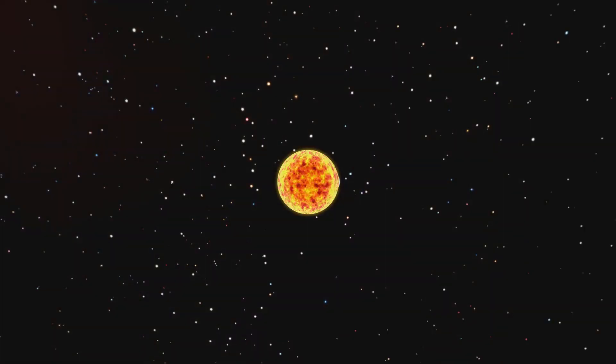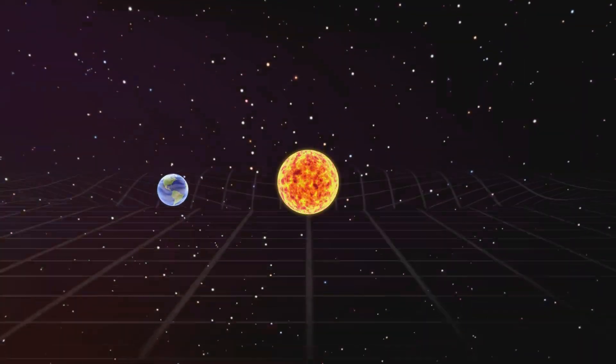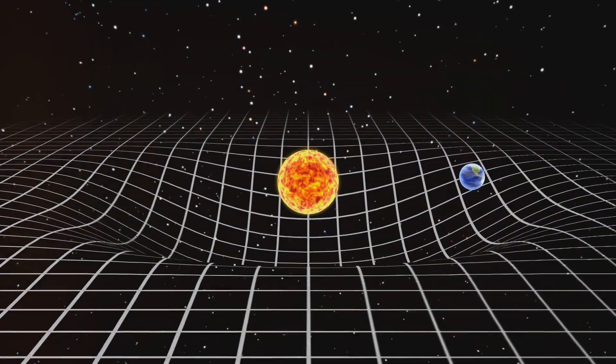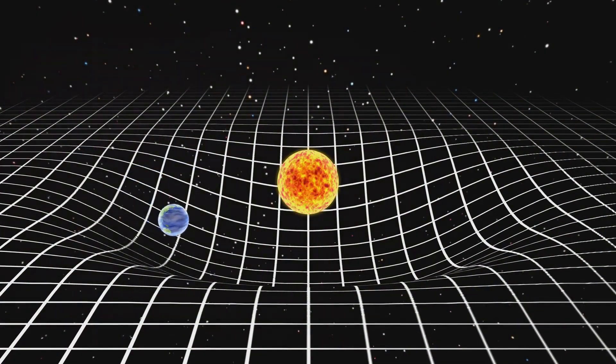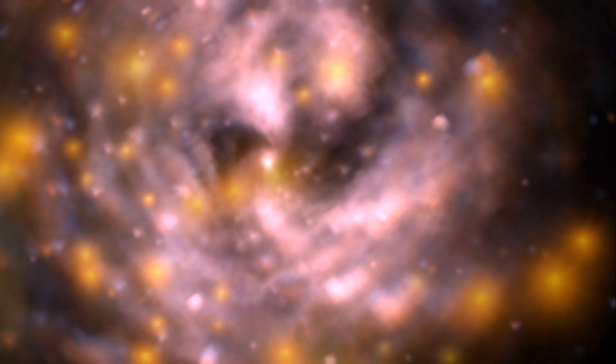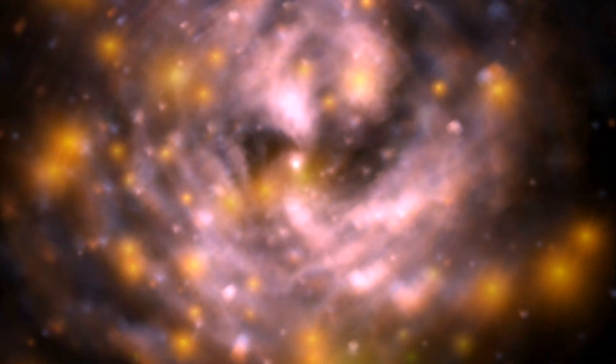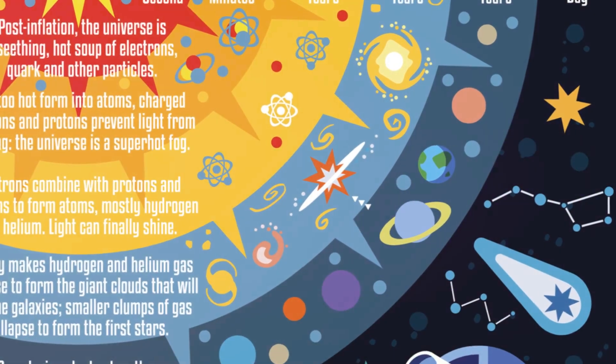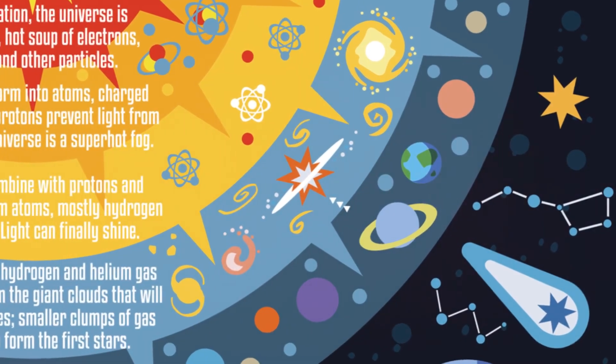Next, let's turn our gaze to the impact on our understanding of the universe. The existence of a Type 9 civilization could potentially answer some of the most mind-boggling questions we have about the cosmos. Where did the universe come from? What lies beyond the observable universe? These mysteries could be solved, not by divine revelation, but through the technological prowess of a civilization that has mastered the multiverse. However, it also raises a chilling question. If such a civilization exists, why haven't we encountered them yet?